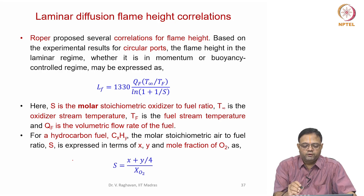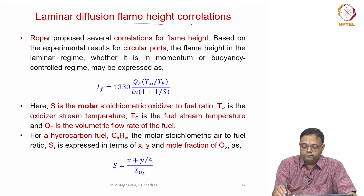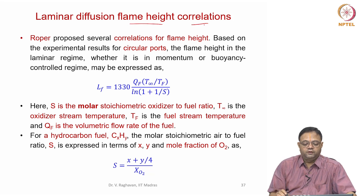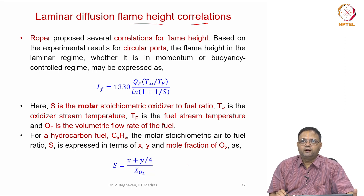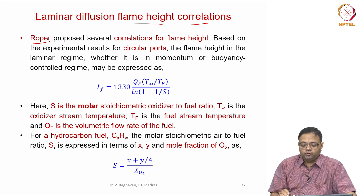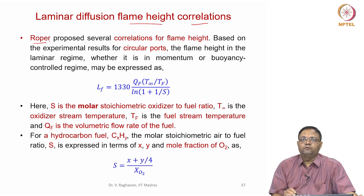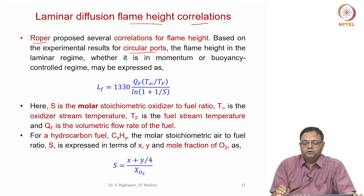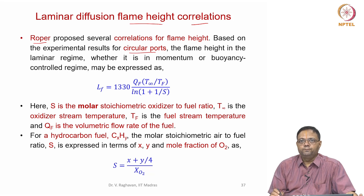Good morning. Let us continue with the flame height correlations. You have seen that for diffusion flames, the flame extent or flame height is one of the important characteristics. Roper has proposed correlations for flame height for different types of burners having circular ports, square ports, rectangular ports, and so on.